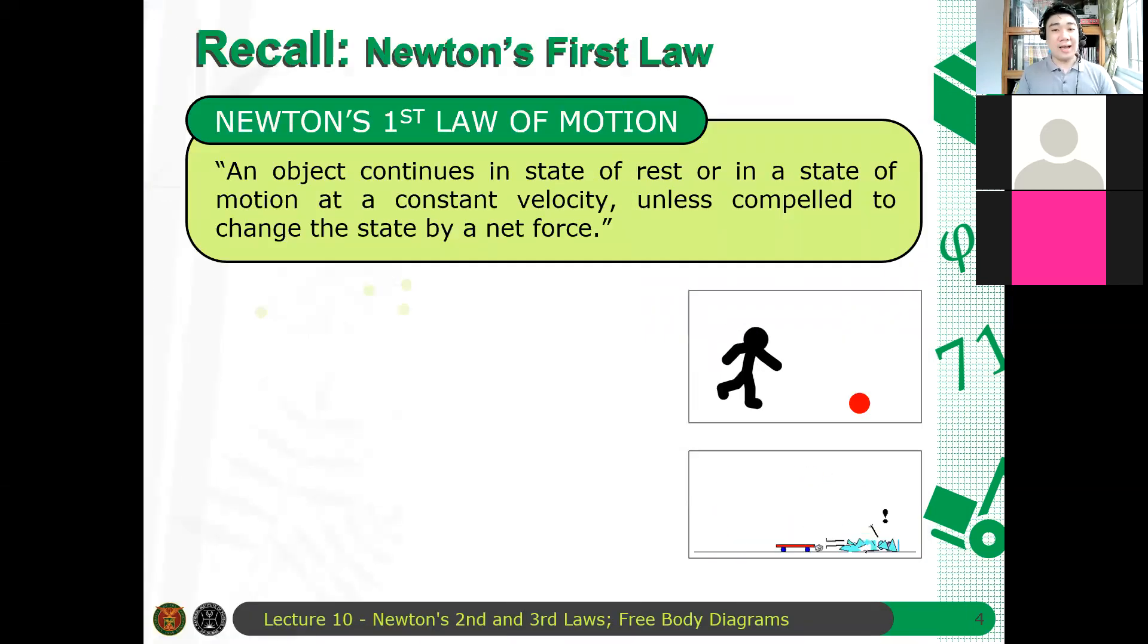Naaalala niyo last time we discussed Newton's first law. Again, just a recap. Newton's first law says that an object continues in state of rest or in state of motion at a constant velocity unless compelled to change the state by a net force. The tendency of an object for it to continue its state of motion, whether it's at rest or it's in motion, is what's known as your inertia.